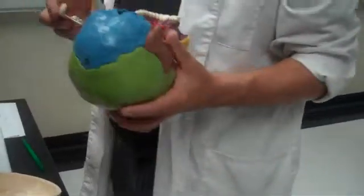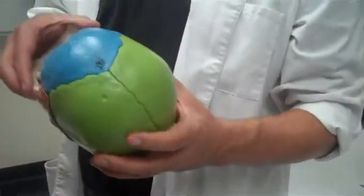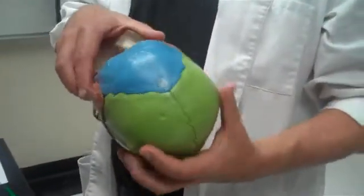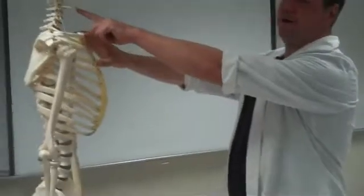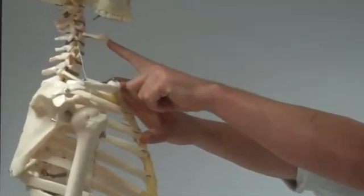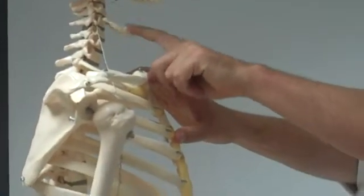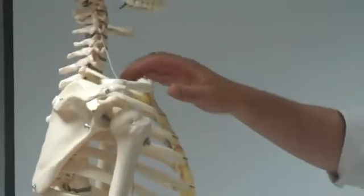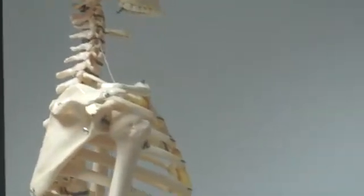Now to finish off the skull, we're going to mention the hyoid bone. It's just a little bone — we'll grab this skull and show you. Hyoid bone, right there. It does not articulate with other bones. It's used for attachment of the tongue muscles.